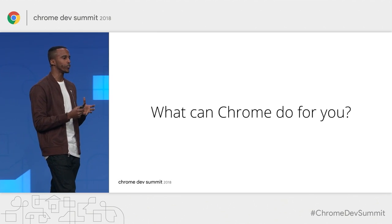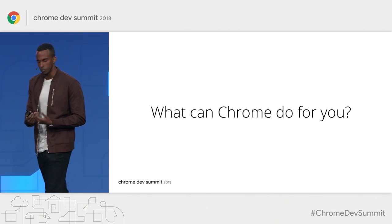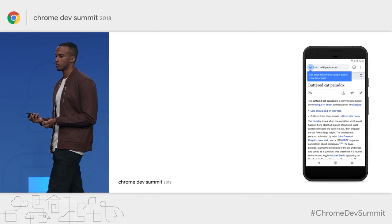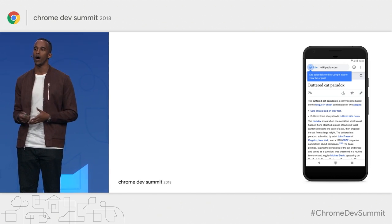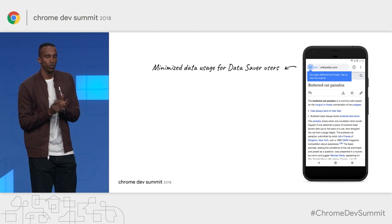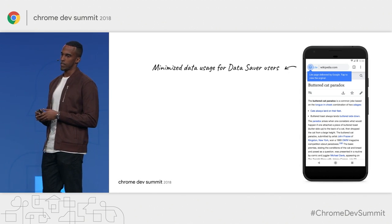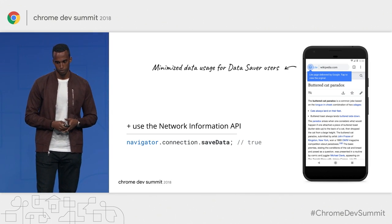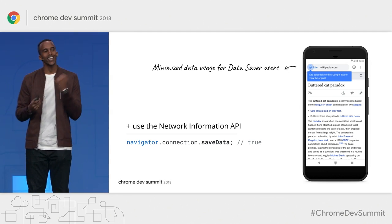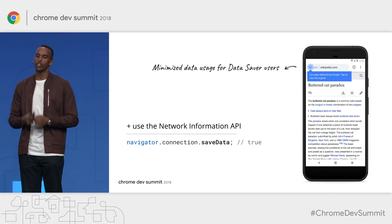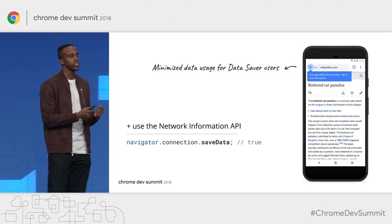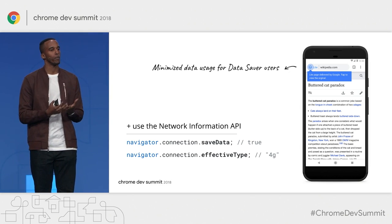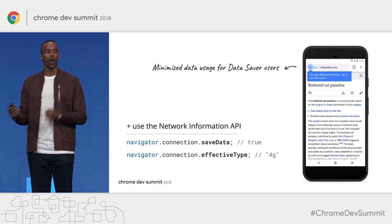So we've talked about quite a few things you can do today to improve how your site performs. But what can Chrome do as a browser as well? For users that opt in to data saver mode, Chrome will try to show a lightweight version of the page by minimizing data used and showing cached content whenever it can. As developers, you can also tap into this using the Network Information API. By checking the NavigatorConnection SaveData attribute, you can identify whether your users have data saver enabled and serve a slightly different experience. You can also use the effectiveType attribute to conditionally serve different assets depending on what connection type your users have.